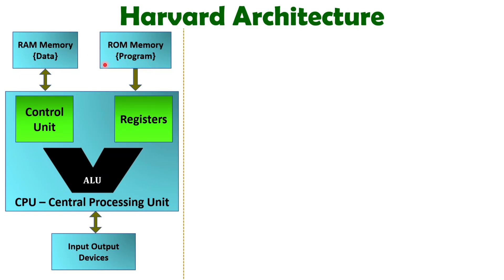With Harvard Architecture, the CPU is accessing two separate memories — ROM and RAM. ROM is for the program and RAM is for the data. One basic advantage of Harvard Architecture is that along with the program, you can also access data simultaneously. The reason is there are separate system buses. In Von Neumann architecture, there was common memory for data and program, so at a time either you access program or data. But with Harvard Architecture, program access and data access are possible at the same time, as the system buses are separate.